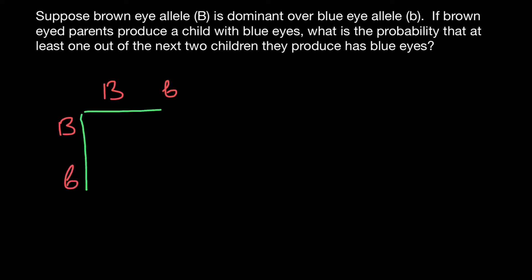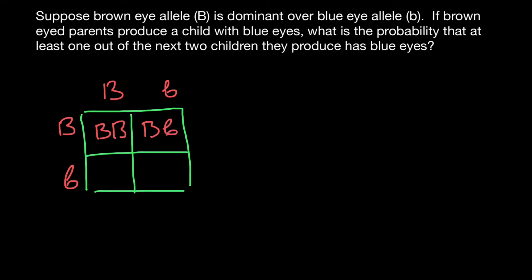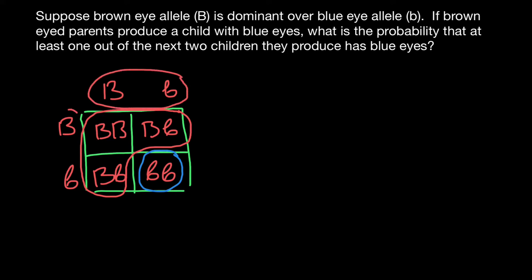Only if both parents are heterozygous can they produce a child with blue eyes. Looking at the Punnett square: capital B / capital B, capital B / small b, capital B / small b, and small b / small b. The child who has two recessive alleles would have blue eyes. Three quarters of the progeny are going to have brown eyes and one quarter are going to have blue eyes.